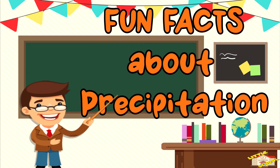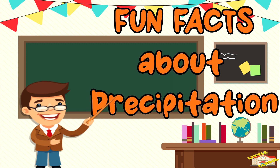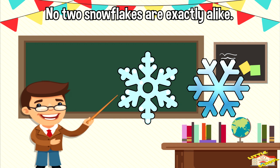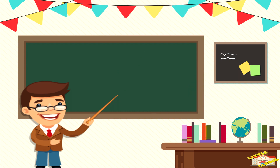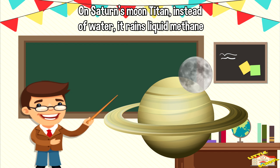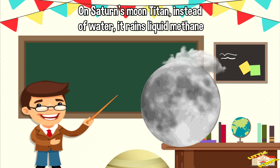Now here are some fun facts about precipitation. No two snowflakes are exactly alike. Precipitation can occur on other planets and moons in our solar system. For example, on Saturn's moon Titan, instead of water, it rains liquid methane.